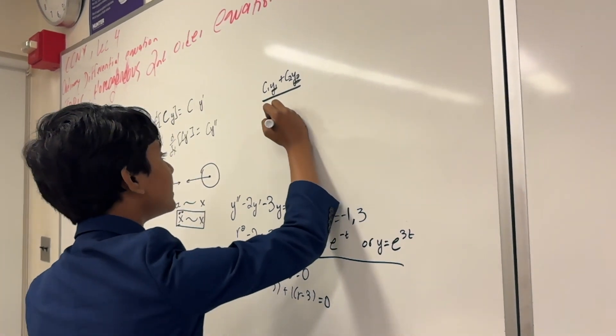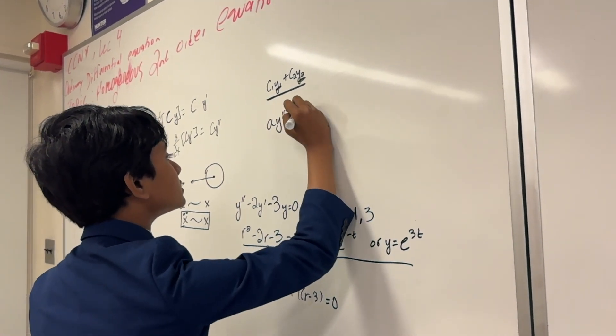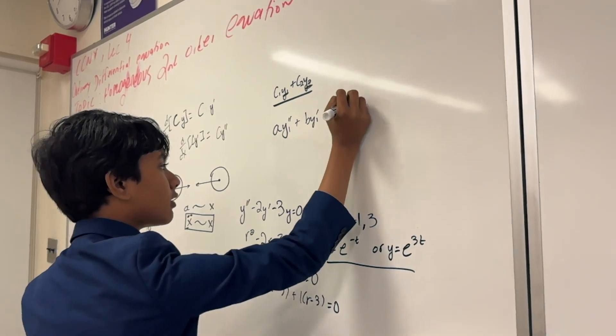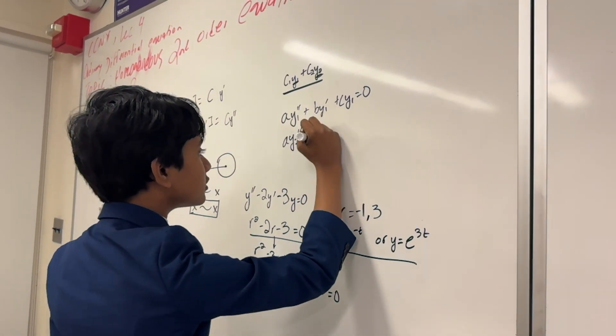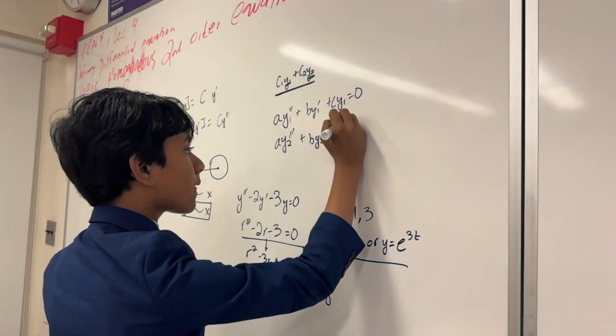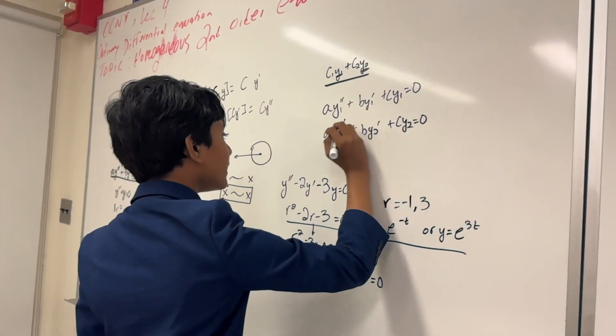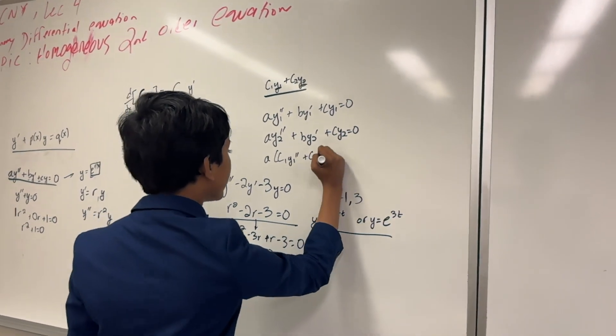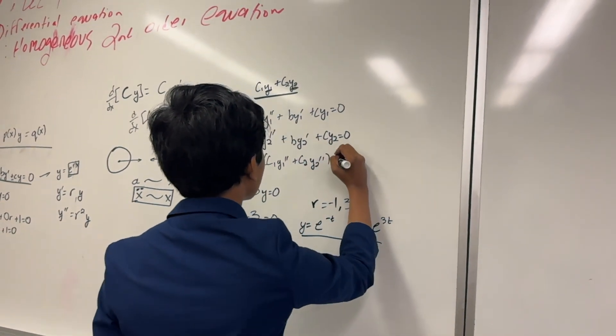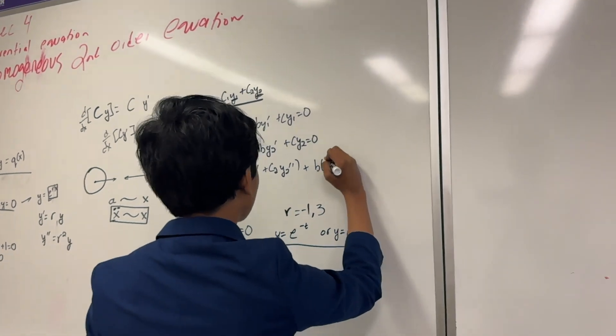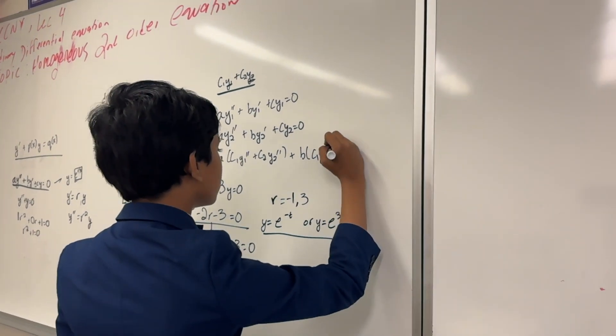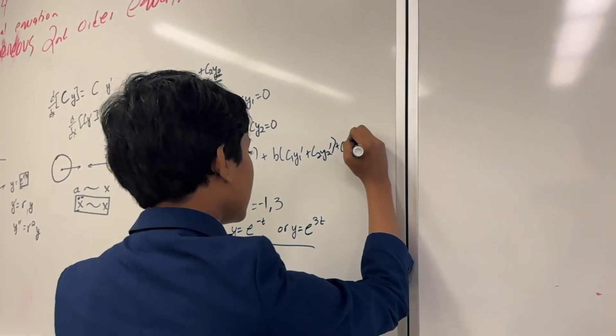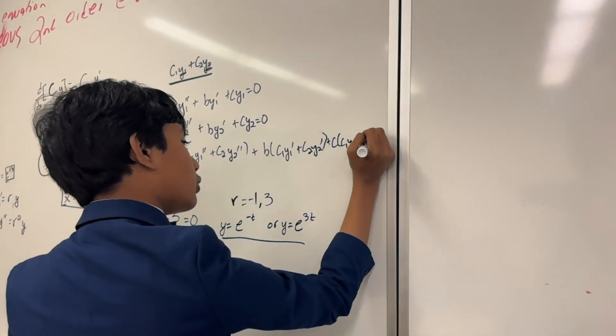So all we have to do now is plug this in and see if it works. Given that a y1 double prime plus b y1 single prime plus c y1 equals 0, and given the same thing for a different solution y2. Now, plugging in, we get a times c1 y1 double prime plus c2 y2 double prime, plus b times c1 y1 single prime plus c2 y2 single prime, plus c times c1 y1 plus c2 y2.